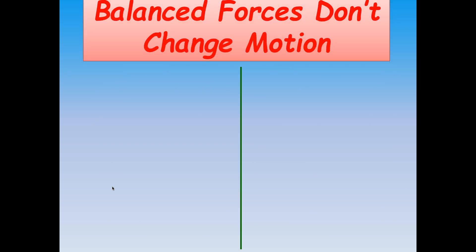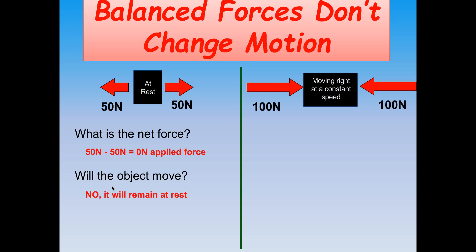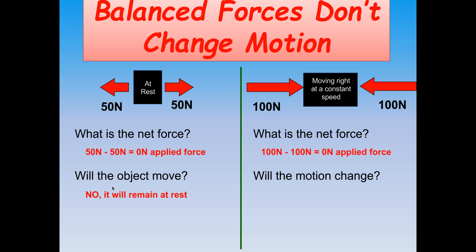Let's look at net force diagrams for balanced forces. Here I have a box at rest: 50 newtons minus 50 newtons gives 0 newtons of net force, so the box stays at rest. Now check out this box — it's already moving to the right at a constant speed, and two forces are acting on it. 100 newtons minus 100 newtons equals 0 newtons of applied force. So the motion won't change — this box will continue moving right at a constant speed as long as forces are balanced.